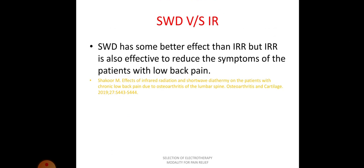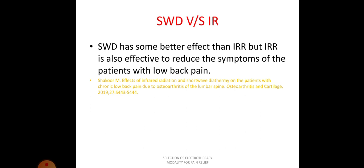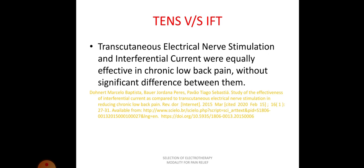Shortwave diathermy versus infrared: shortwave diathermy is a deep heating modality while infrared is superficial. Shortwave diathermy has a better effect than infrared radiation, but infrared radiation is also effective at reducing symptoms in patients with low back pain — both are effective, but shortwave diathermy has a better effect. Regarding TENS versus interferential therapy: they were found equally effective in chronic low back pain patients, with no significant difference in their effects.